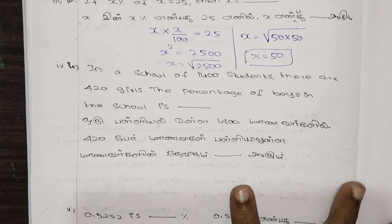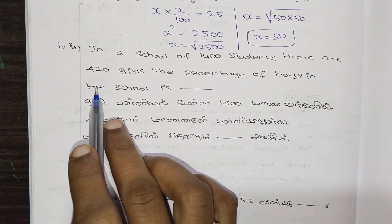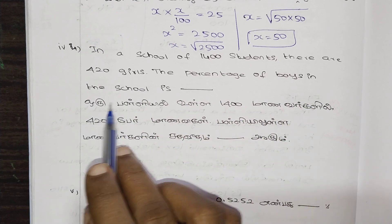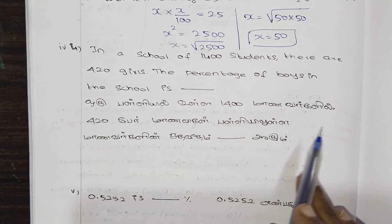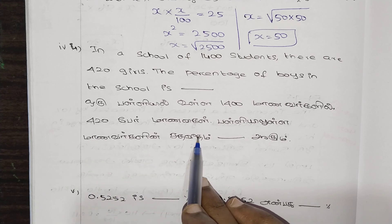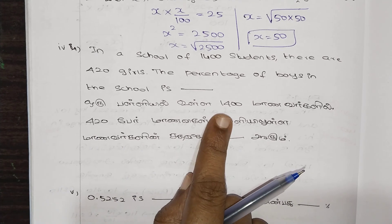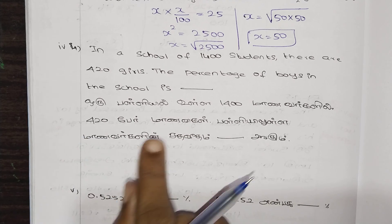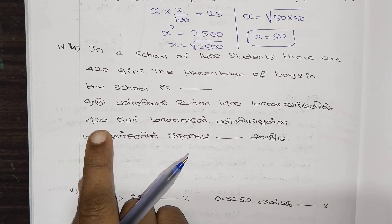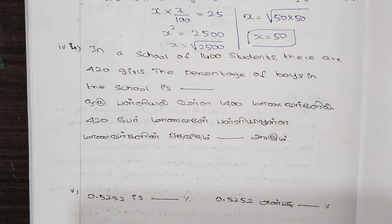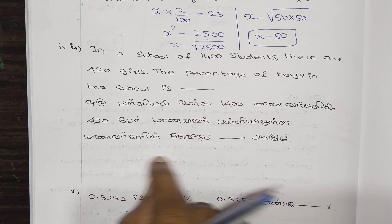That is the fourth question. In a school of 1400 students, there are 420 girls. We need to find the percentage of boys in the school. First, we find the number of boys, which is total students minus girls.